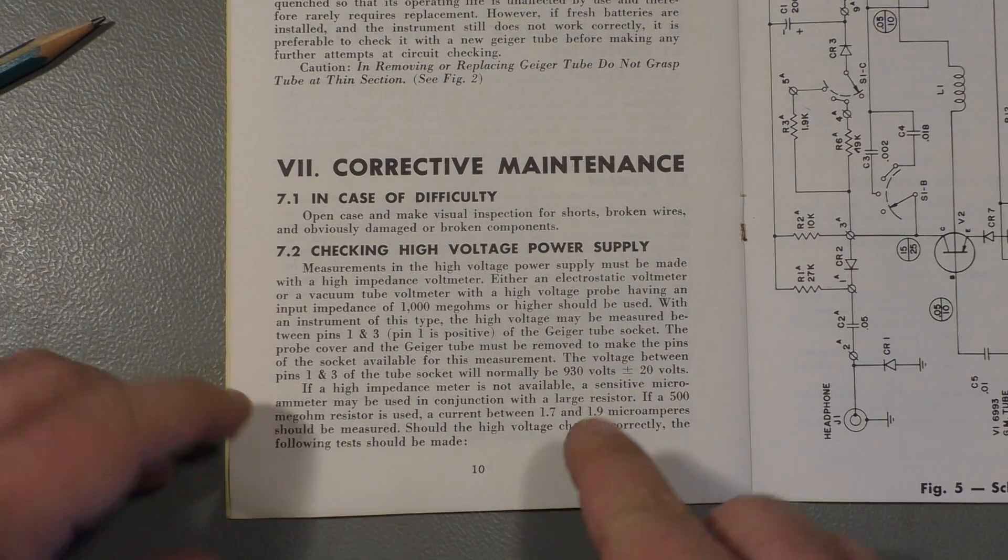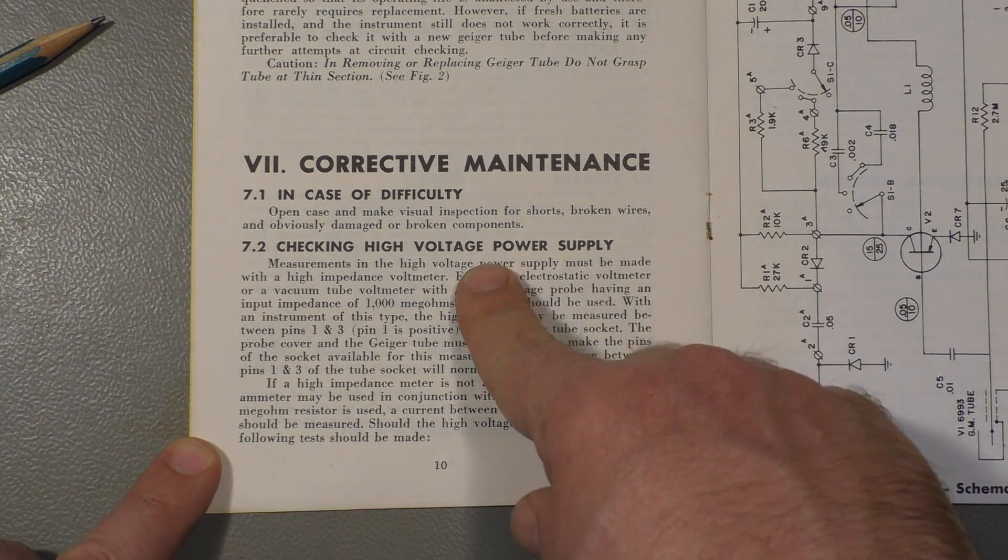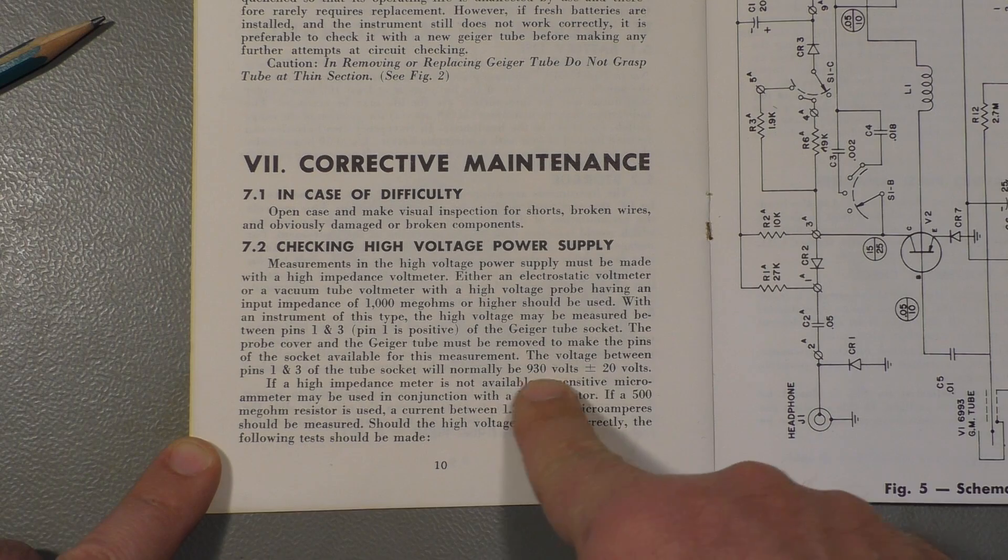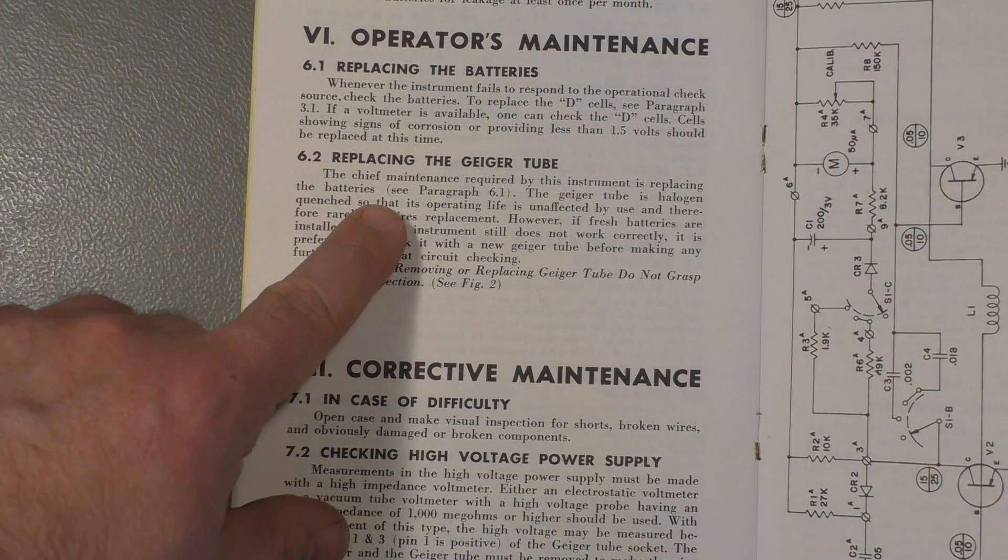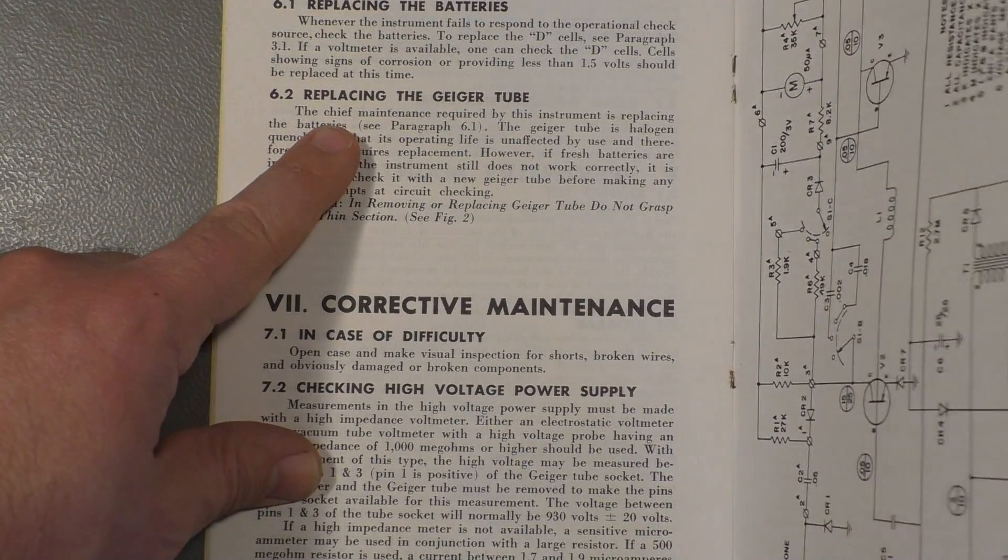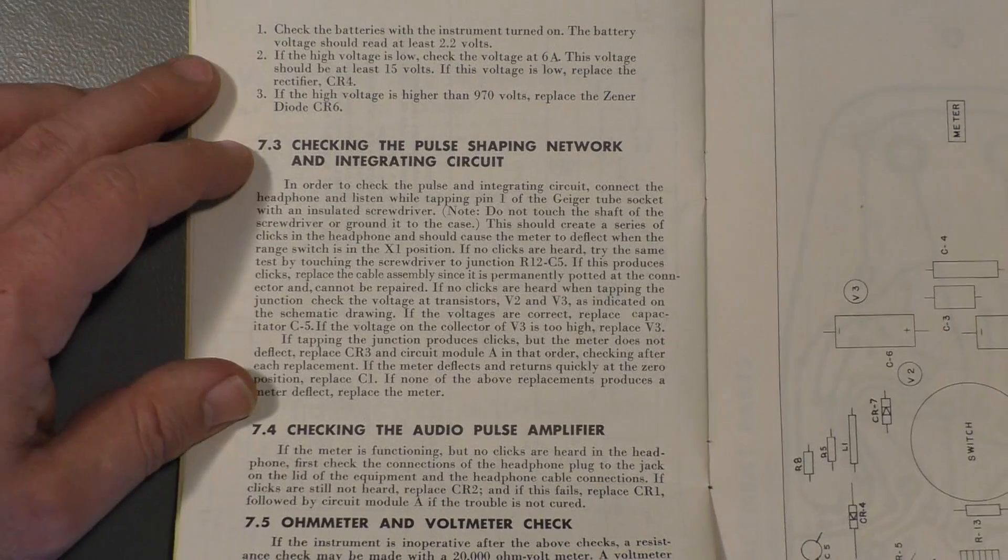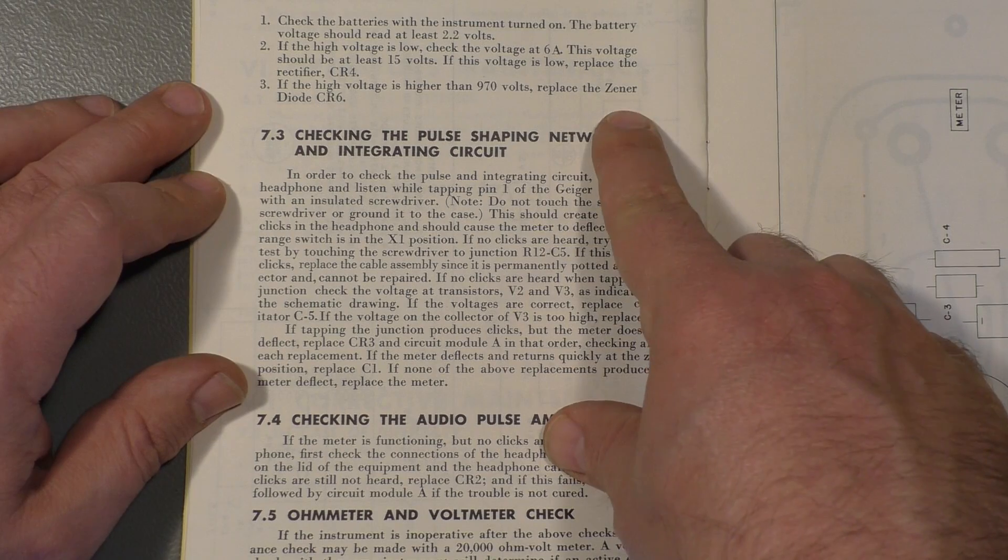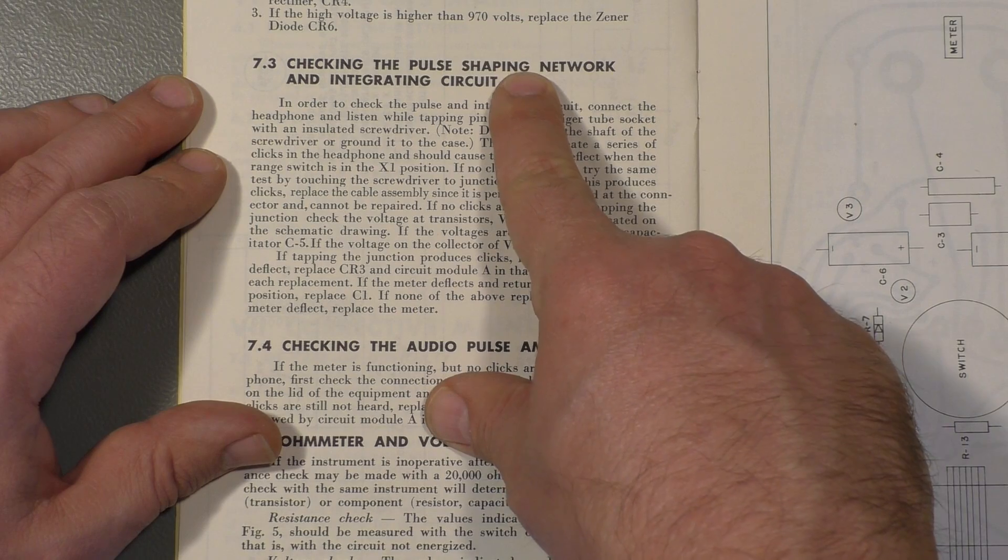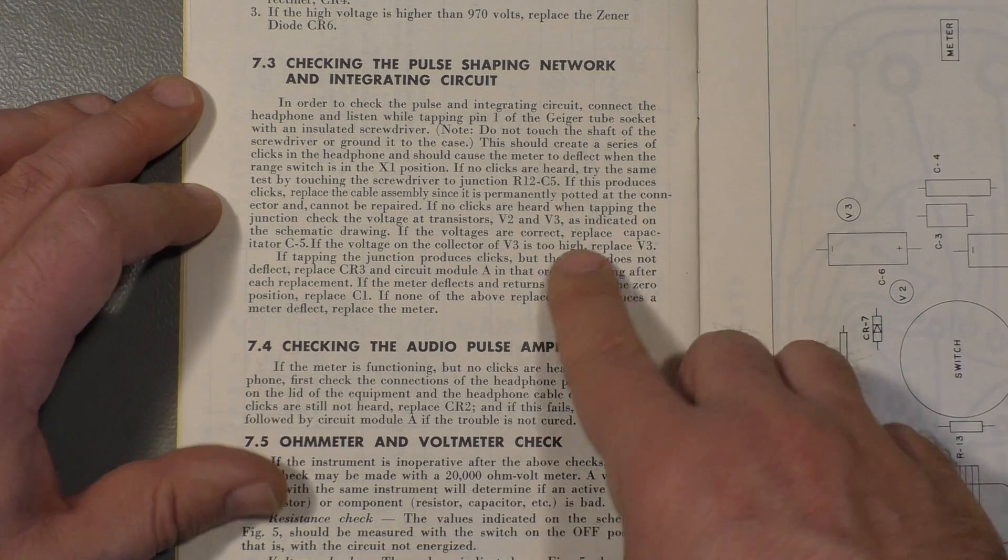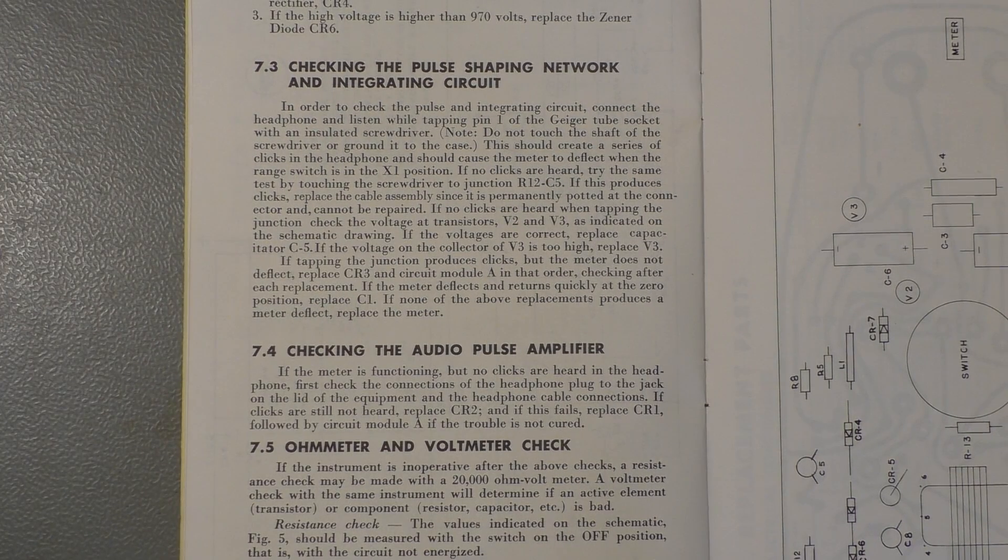And everything is detailed. There is a detailed description of everything. High voltage power supply, 930 volts plus minus 20 volts. How to replace the tube, if it's necessary. But I think there have been produced so many of these units, you would simply change the unit, instead of changing the tube. Pulse shaping network, that's the monoflop I described. If you want, you can read the entire chapter here.